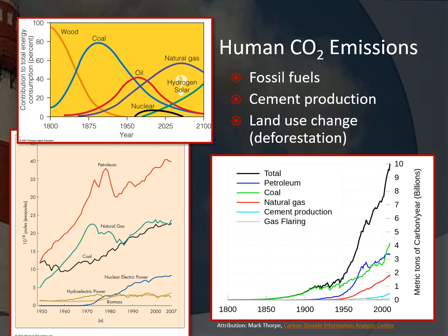Land use change and deforestation also contributes to CO₂ emissions. When you cut down trees that are storing carbon, that carbon gets released back into the atmosphere. Many people are worried about Amazon deforestation not only because of its biodiversity, but also because you're essentially destroying a massive carbon sink that could help mitigate the impact of burning fossil fuels and producing cement.